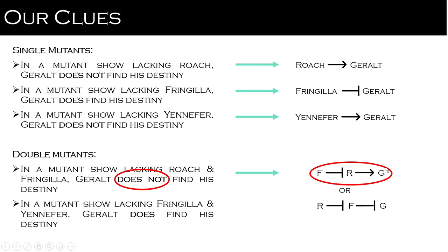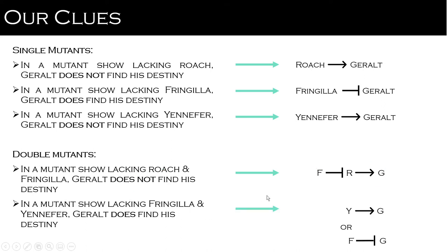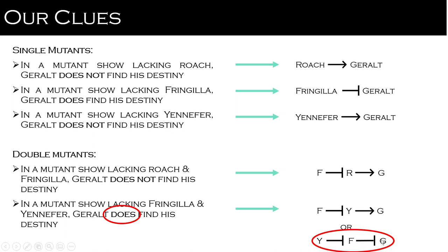We'll use our next clue to figure out the last order of things. In a mutant lacking Fringilla and Yennefer, Geralt does find his destiny. We can either say Fringilla blocks Yennefer who promotes Geralt, or Yennefer blocks Fringilla who blocks Geralt. Since Geralt still finds his destiny, it must be the second scenario — neither is directly promoting transcription of Geralt. If Yennefer blocks Fringilla and Fringilla blocks Geralt, and both are gone, they're just repressing each other, so Geralt can still be translated.